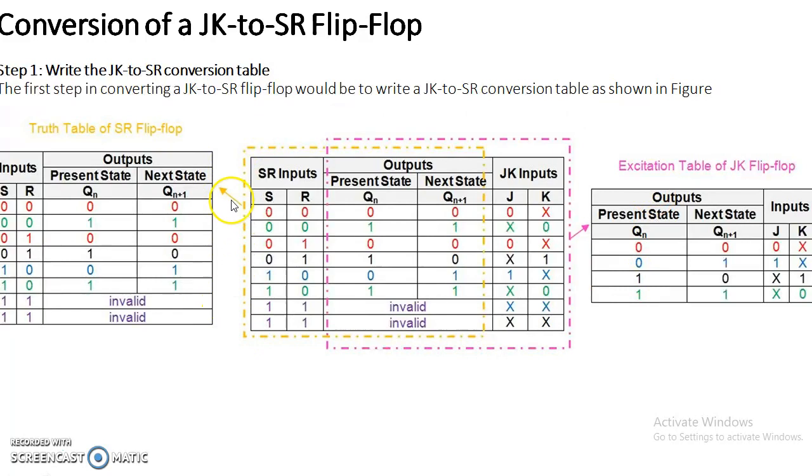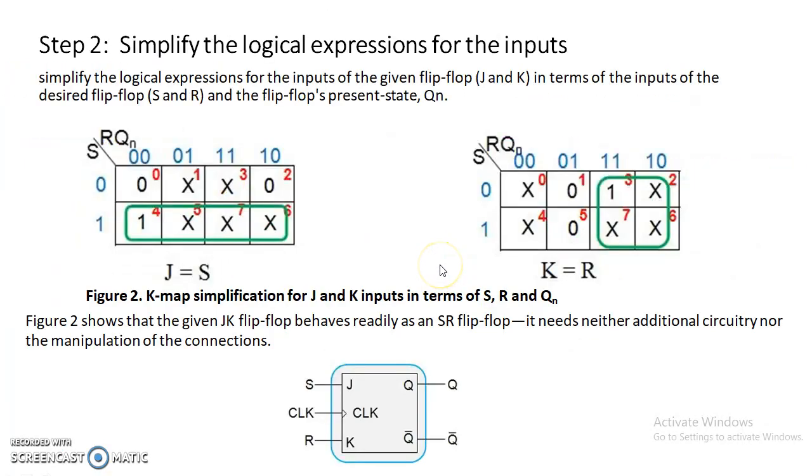So this dotted line, yellow dotted line, shows the truth table for SR flip-flop, and the other with purple dotted line shows the excitation table for the JK flip-flop. With this, we are ready with the conversion table for the JK flip-flop.